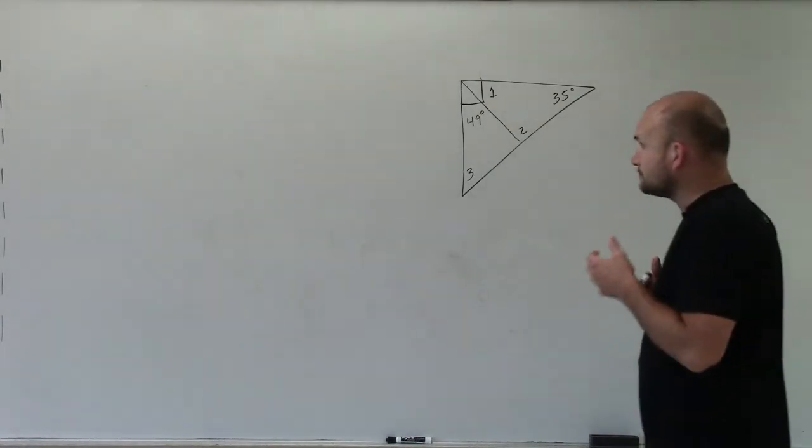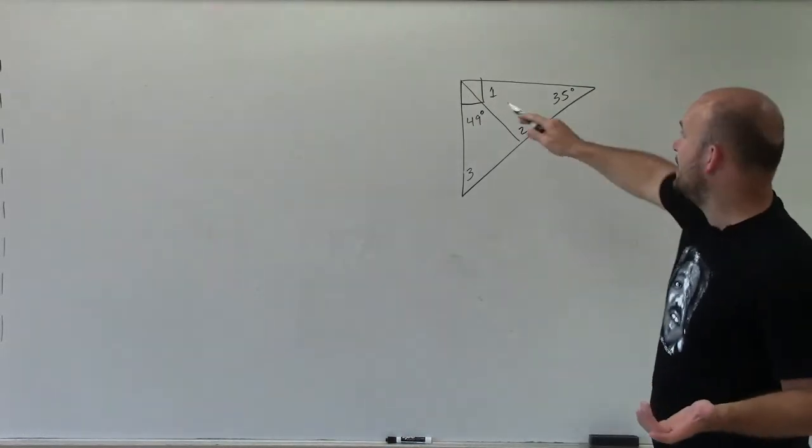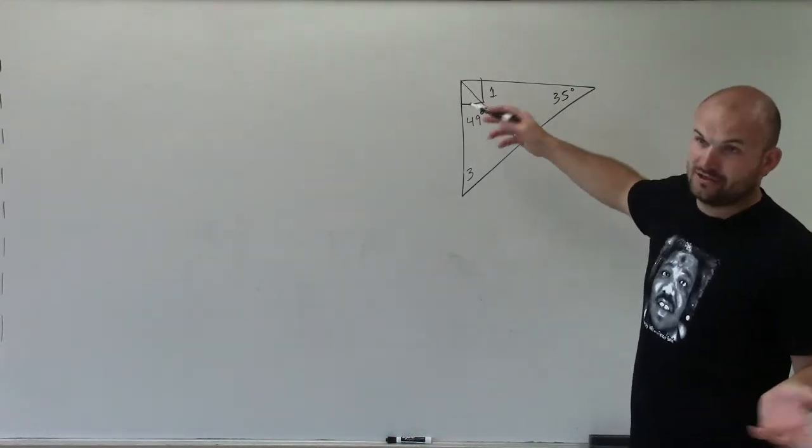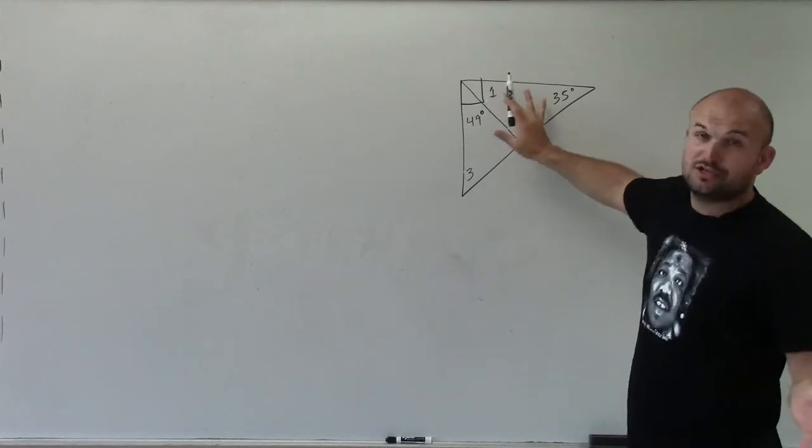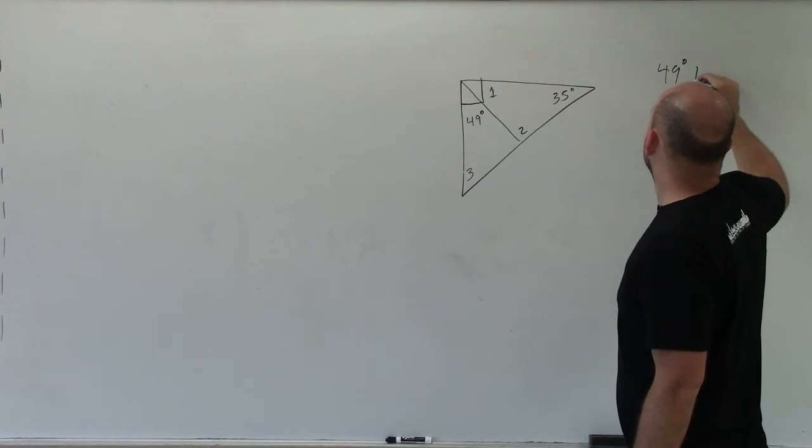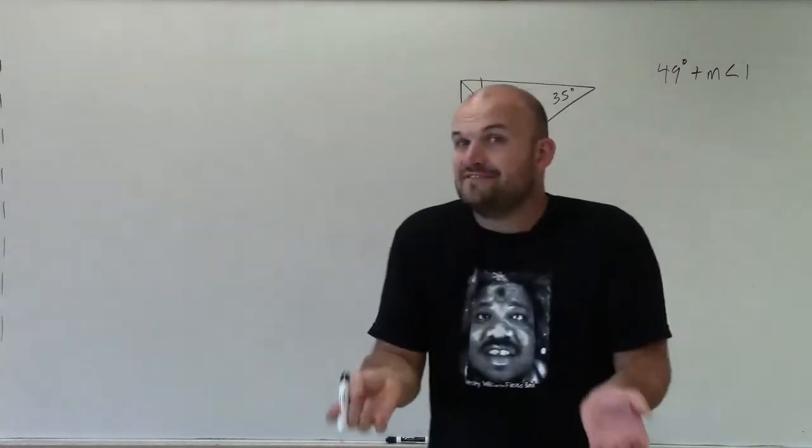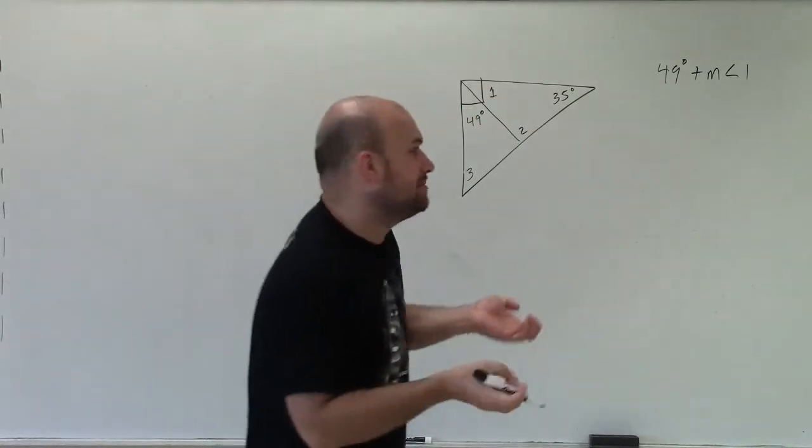Well, the first thing I notice is since I know this is a 90 degree angle, and this line cuts that angle, not necessarily in half, but it cuts it into two separate parts. So therefore I know that 49 plus the measure of angle 1, those two have to add up to 90 degrees, which we call complementary angles.